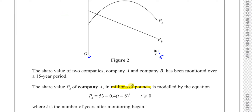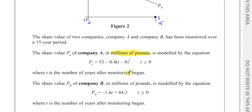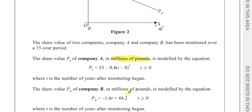A very key thing here is that the values are in millions of pounds, so when they ask for certain values you must mention the unit. The share value PA of Company A is modeled by the equation PA = 53 − 0.4(T − 8)², where T is the number of years after monitoring began. The share value PB of Company B is modeled by PB = −1.6T + 44.2.